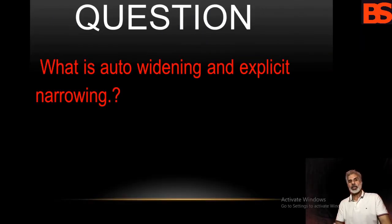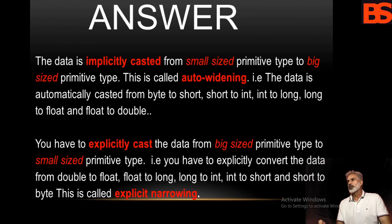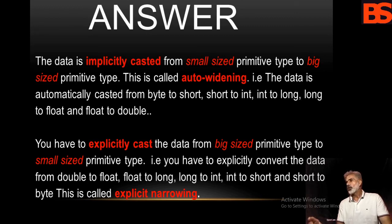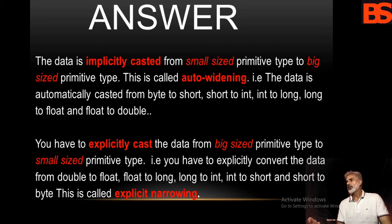In the last lecture I had asked: what is auto widening and explicit narrowing? The answer is: data is implicitly cast from a small-sized primitive type to a big-sized primitive type — this is called auto widening. For example, data is automatically cast from byte to short, short to int, int to long, long to float. You have to explicitly cast the data from a big-sized primitive type to a small-sized primitive type.